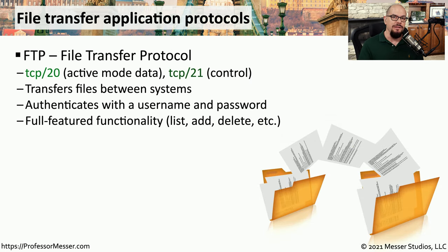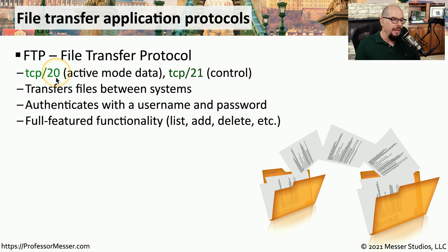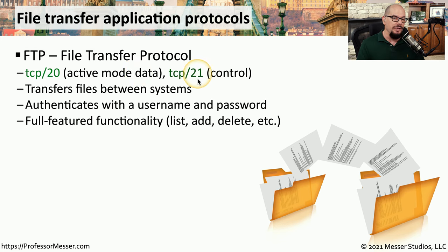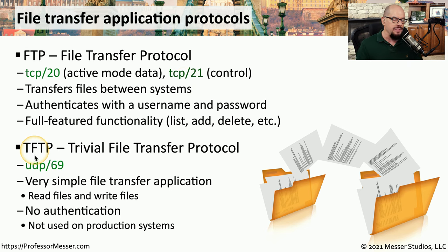There are also other protocols for file transfers. One is FTP, or File Transfer Protocol. FTP uses two different port numbers: TCP port 20 for active mode data, which is where files are actually transferred, and TCP port 21 for the control process that tells the system which file to send. FTP has authentication functionality, can add files, list file directories, and perform other file management functions. There is also a less functional form called TFTP, or Trivial File Transfer Protocol, which communicates over UDP port 69.